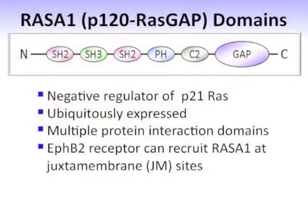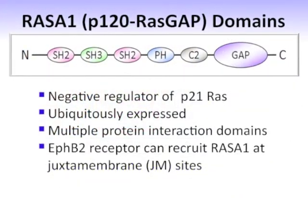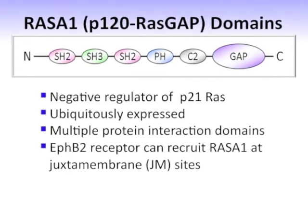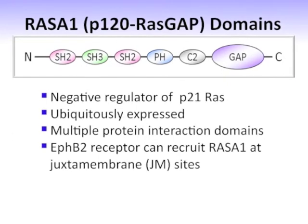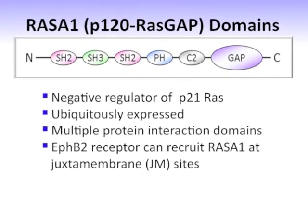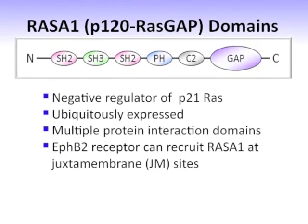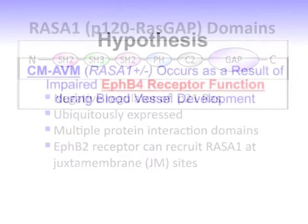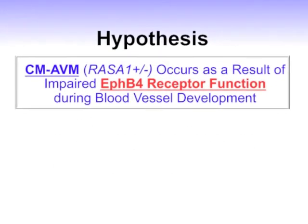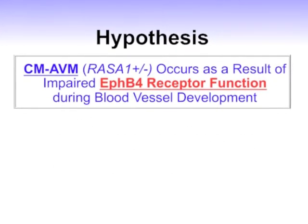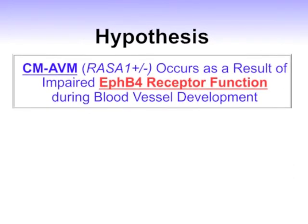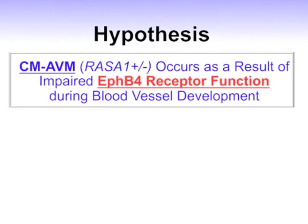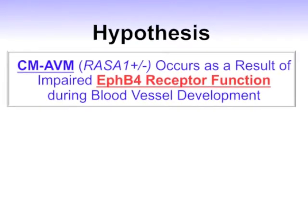P120 RAS GAP is a unique RAS GAP in that it has a number of domain structures recognized by signaling proteins. For example, it has SH2 domains and SH3 domains in addition to the GAP domain. The GAP domain is used to turn down RAS action. Our hypothesis is that the disease induced by RASA1 mutations — called capillary malformation arteriovenous malformation — occurs as a result of impaired EphB4 signaling.